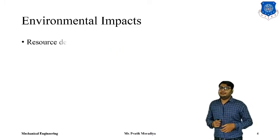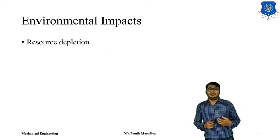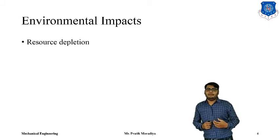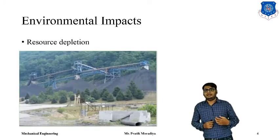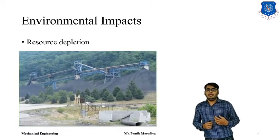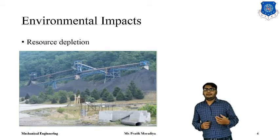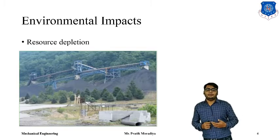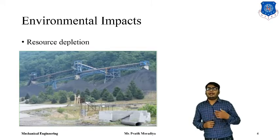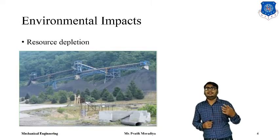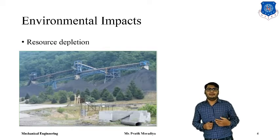Another major concern is resource depletion. Many of our resources on earth are limited — for example, fossil fuels and agricultural lands. If we do not think twice about using these resources, they might become obsolete in the near future. Fossil fuels such as coal and petroleum products need to be used carefully, otherwise they will not be available in the upcoming 100 to 120 years.